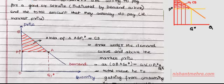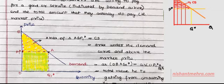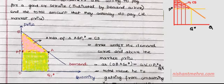If you are going to buy Q1-star units, the total benefit you receive is the entire area under the demand curve (shown in yellow). However, the amount you actually have to pay is only the rectangle — price times quantity (shown in green). The area left over, shown in pink, is nothing but the consumer surplus — the benefit minus the expenditure.